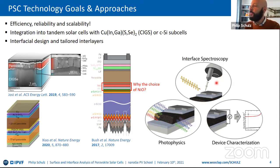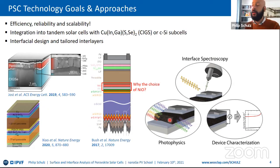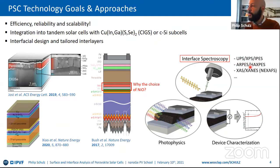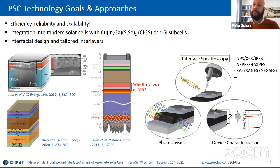The approach we use to understand the properties of these layers is depicted in this trifecta: starting with interface spectroscopy — which I'll explain in a moment — then photophysics (absorption and emission in the UV-Vis), and device characterization. This talk is really focused on interface spectroscopy. The most basic aspects you've probably encountered are UPS, XPS, and IPS. There are also more advanced methods like angle-resolved photoemission spectroscopy, hard x-ray photoemission, and x-ray absorption spectroscopy.